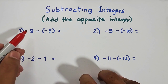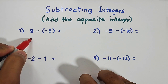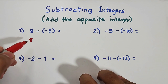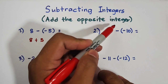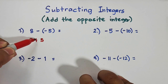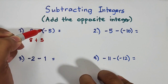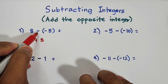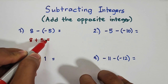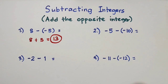In number one, we have 8 minus negative 5. The first thing you need to do is copy 8, and then add the opposite integer — meaning we will add positive 5. We copy the 8, then according to the instruction we change the operation to addition and add the opposite sign, the inverse of negative 5, which is positive 5. Therefore, 8 minus negative 5 is simply 8 plus 5, which equals 13.